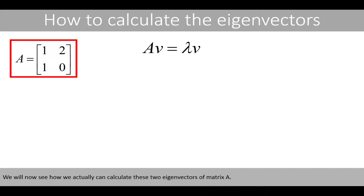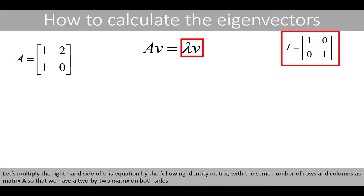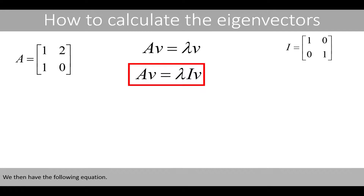We will now see how we can calculate these two eigenvectors of matrix A. Let's multiply the right-hand side of this equation by the identity matrix, with the same number of rows and columns as matrix A, so that we have a 2x2 matrix on both sides. We then have the following equation.